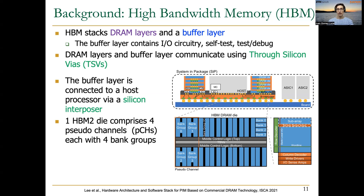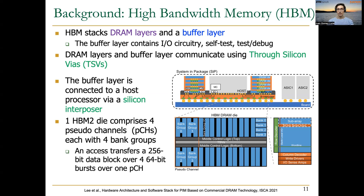One HBM-2 die comprises four pseudo-channels, each with four bank groups. This is the HBM DRAM die, and you can identify here one pseudo-channel composed of bank groups 0 to 3. An access to the HBM memory — a transfer — moves 256 bits, a data block of 256 bits over four 64-bit bursts over one pseudo-channel.